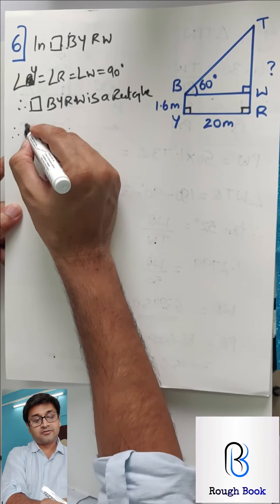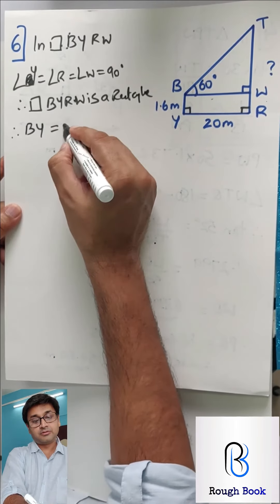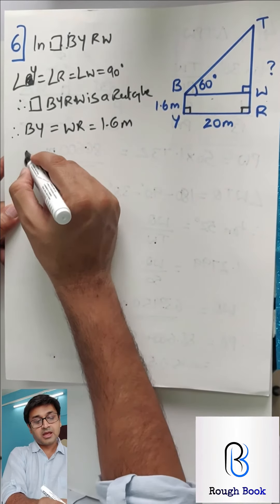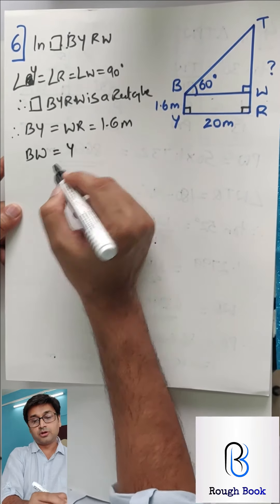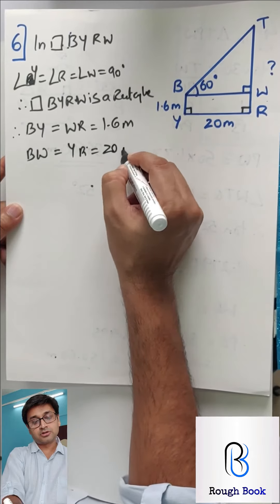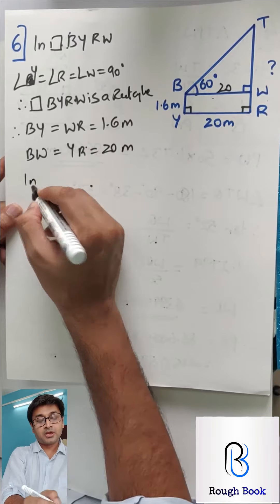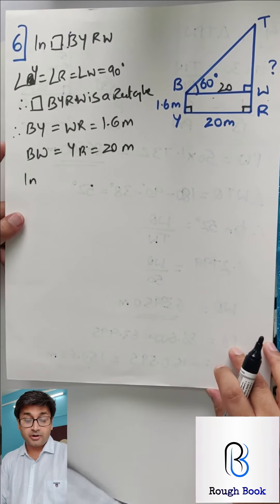First, we'll prove that this is a rectangle. So you say in quadrilateral BYRW, angle Y equals to angle R equals to angle W equals to 90 and therefore quadrilateral BYRW is a rectangle.